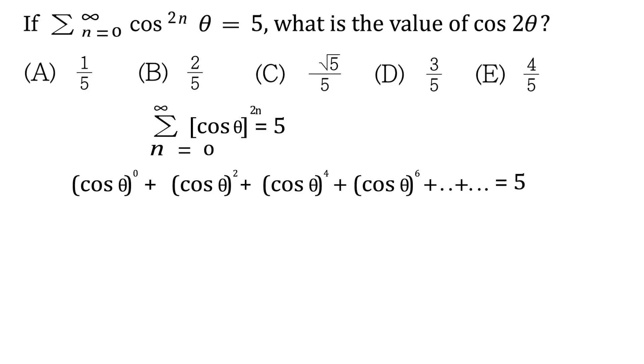So the first thing I'm going to do is, instead of working with cos thetas all the time, let me just let cos theta equal x. And that will just simplify it a little bit. So this becomes x to the 0 plus x squared plus x to the 4th plus x to the 6th, and so on, all the way to forever, and that equals 5.